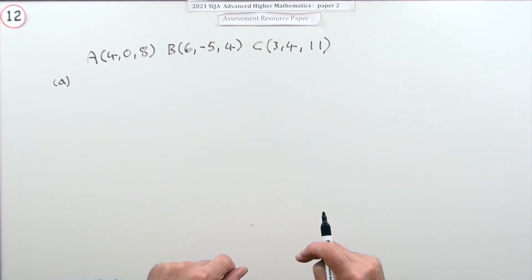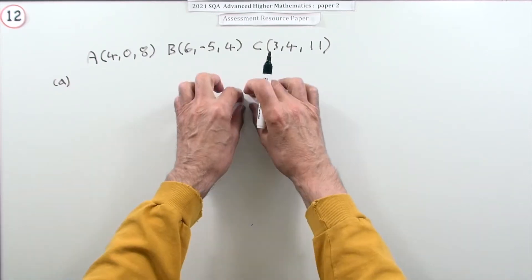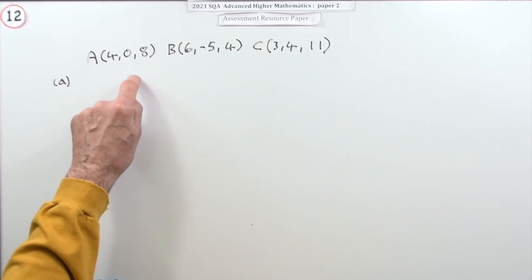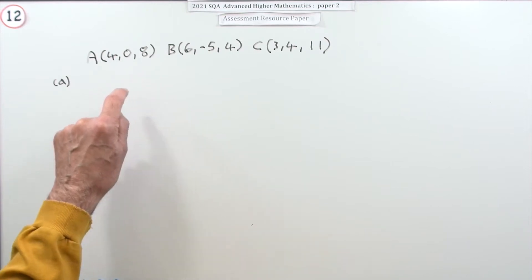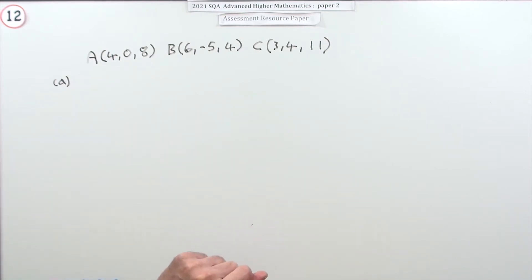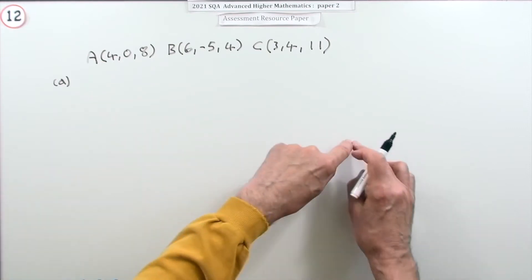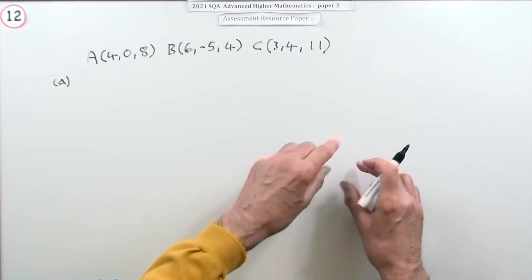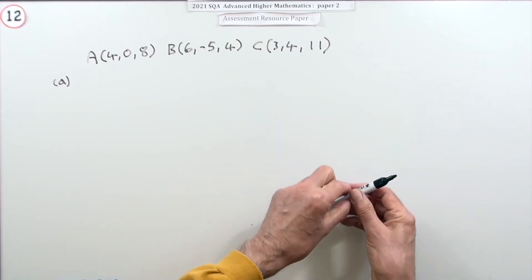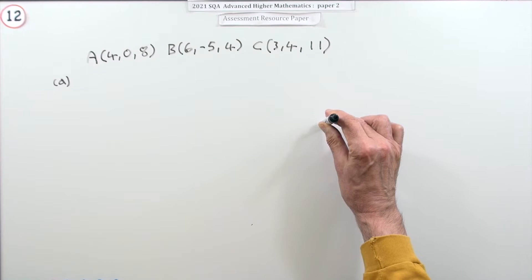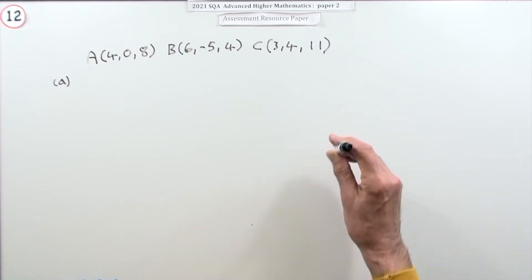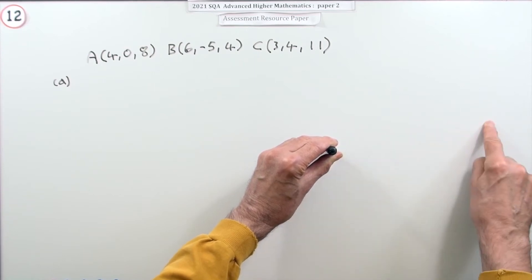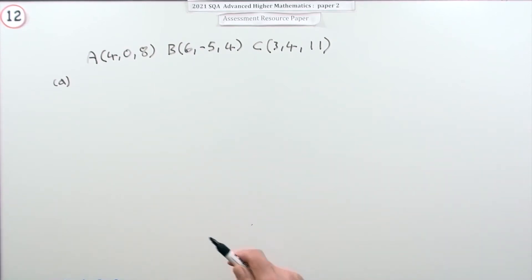The vector equation has offspring: parametric equations, which just means plucking the components out of the vector equation. The Cartesian equation — what's wanted here — connects the coordinates of points that lie in the plane. To get it, you still need the two directions, but instead of following them you use the cross product to get the normal vector, then use the scalar product to find a connection with points in the plane.